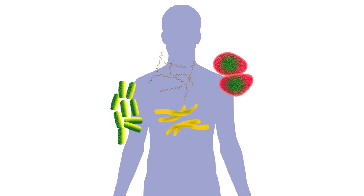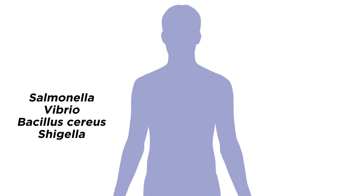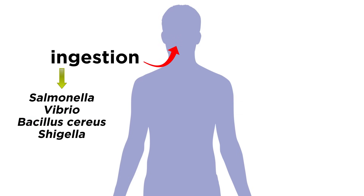Despite our body's best efforts, some of these microbes are able to bypass these defenses. For instance, bacteria such as Salmonella, Vibrio, Bacillus cereus, and Shigella can enter the body through ingestion. This could be from a picnic lunch left out in the sun for too long, or as the result of poor hand washing.